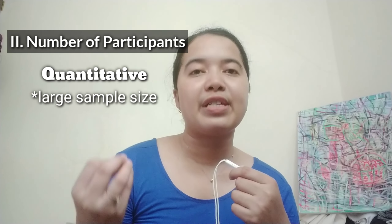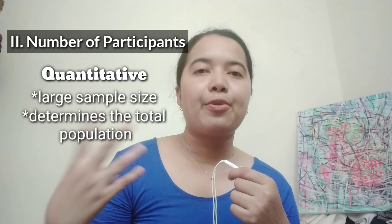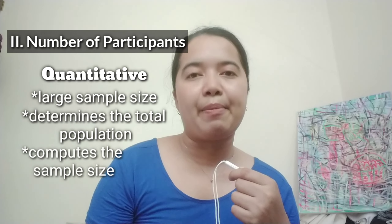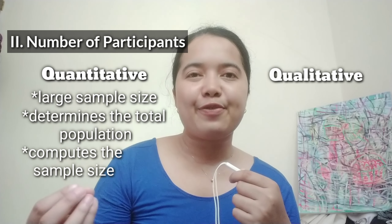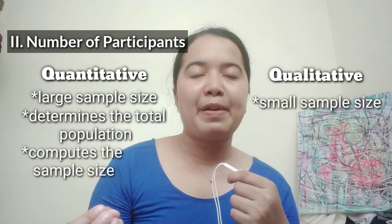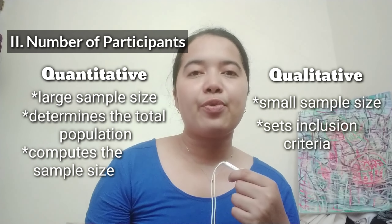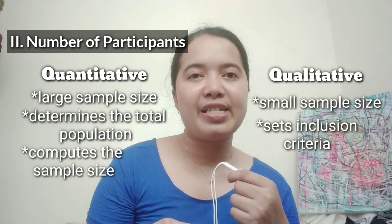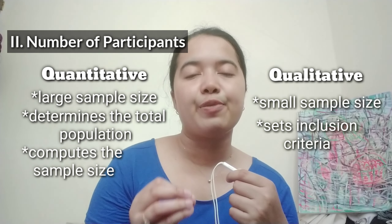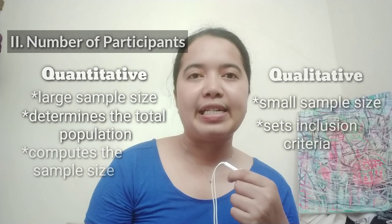Now let's proceed to the number of participants involved in this type of research. For quantitative research, it involves larger participants because we have to take into consideration the total population and compute the sample size. For qualitative research, it has smaller participants because we have to create inclusion criteria first — we have to identify the specific characteristics we want for our conversation partners in the study.